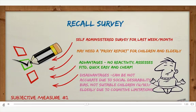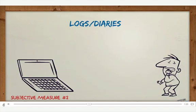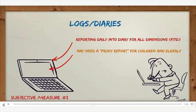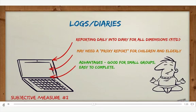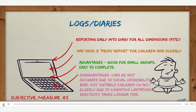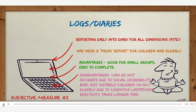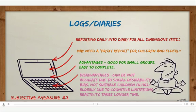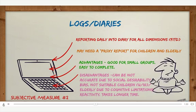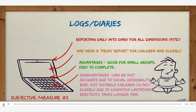The second subjective measure is the log or diary, which are basically the same thing. This involves reporting daily into a diary or log, and you can measure all dimensions — frequency, intensity, type, and duration. You may need a proxy report for a child or elderly person. It's good for small groups and easy to complete. However, it can be inaccurate due to social desirability bias and is not suitable for children or the elderly. It also takes longer than a recall survey because you're doing it as you go rather than all at once.